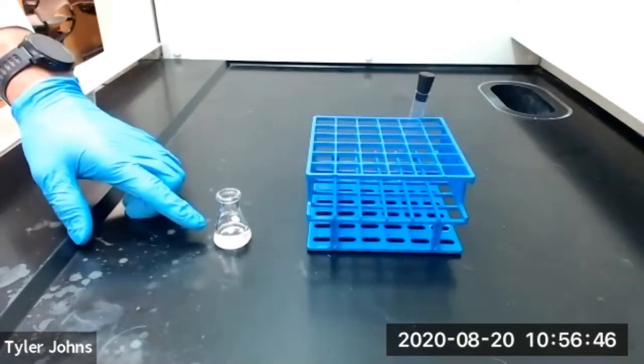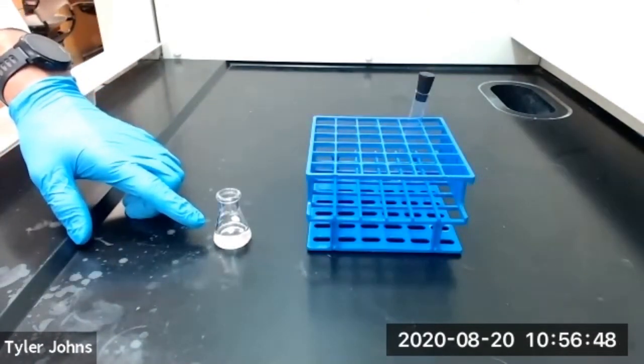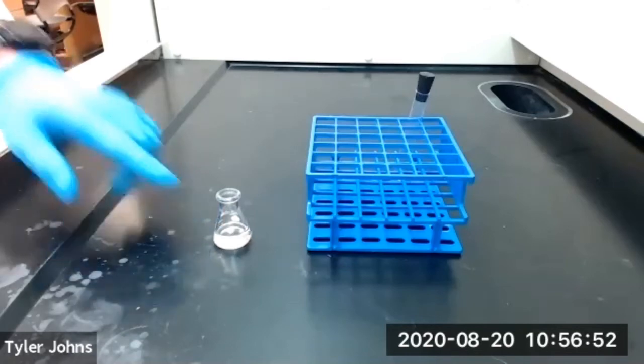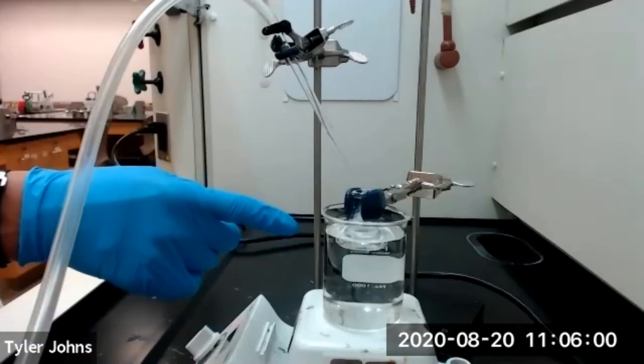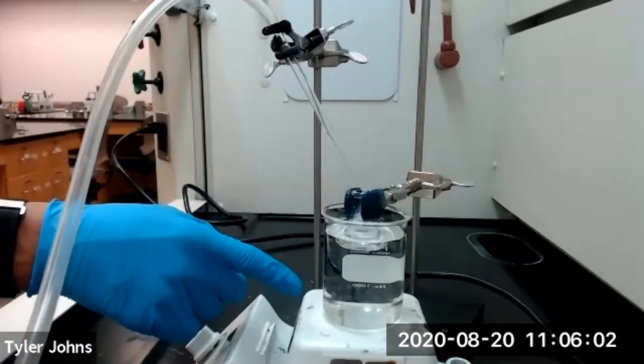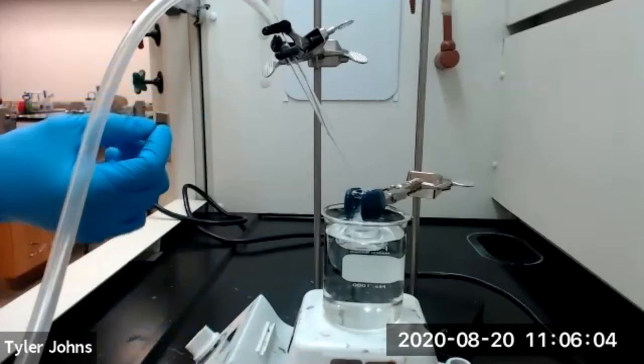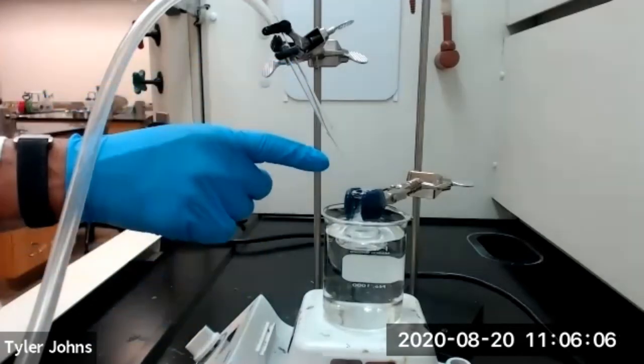We then need to evaporate off the methylene chloride in our 10 milliliter Erlenmeyer flask in a hot water bath. We're now evaporating the methylene chloride and aiding the evaporation using a stream of air.